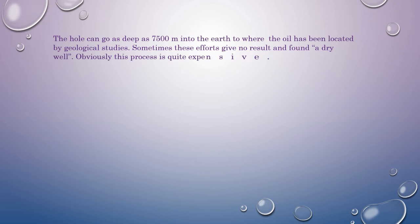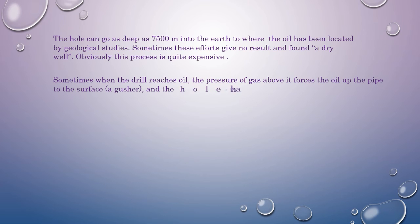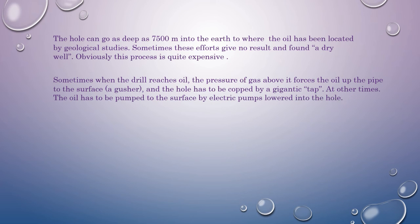The hole can go as deep as 7,500 meters into the earth to where the oil has been located by geological studies. Sometimes these efforts give no result and find a dry well. Obviously, this process is quite expensive. Sometimes when the drill reaches oil, the pressure of gas above it forces the oil up the pipe to the surface as a gusher, and the hole has to be capped by a gigantic tap. At other times, the oil has to be pumped to the surface by electric pumps lowered into the hole.